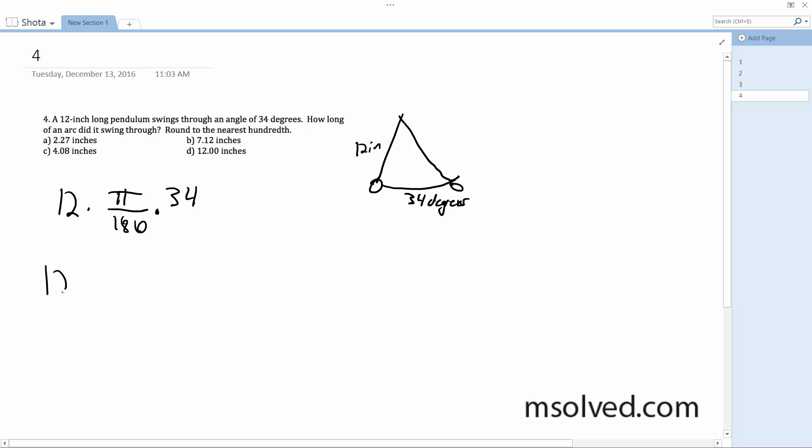So it's going to be 12 times 34 pi over 180. And this simplifies down to 34 pi over 15 after you multiply everything.